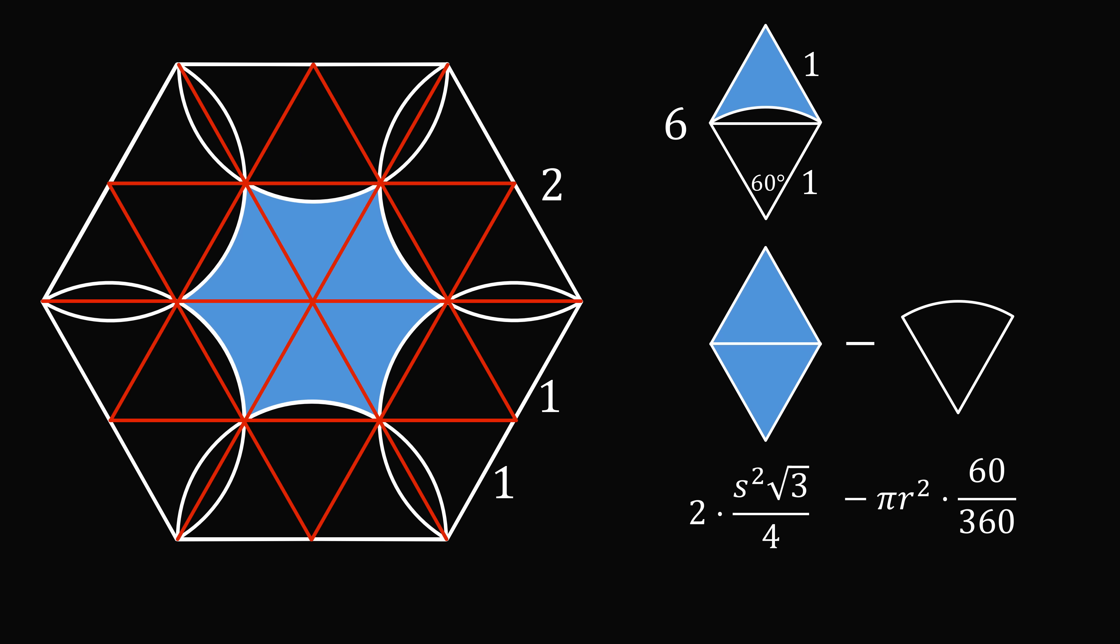Then, we want pi r squared times 60 divided by 360. Now, each equilateral triangle has a side length equal to one, and this circular sector has a radius that's equal to one. So, s squared equals r squared equals one.